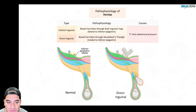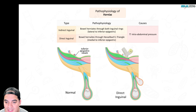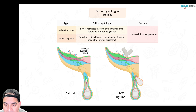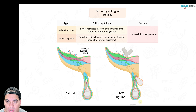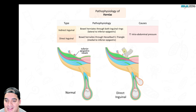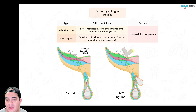Another type is a direct inguinal hernia. With respect to the inferior epigastric vessels, a direct hernia is medial — it moves through the wall, herniating through the last part of the inguinal ring. The usual cause is a massive increase in intra-abdominal pressure from coughing, sneezing, or heavy lifting.